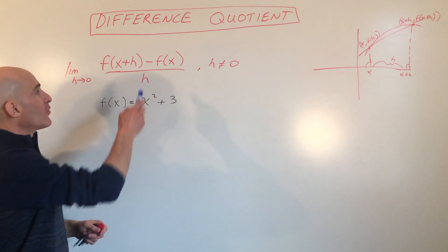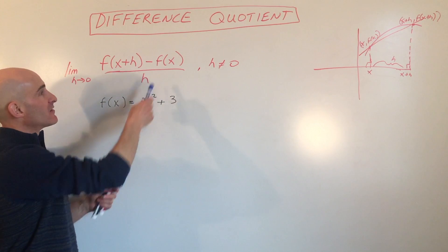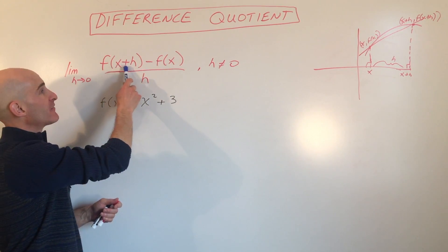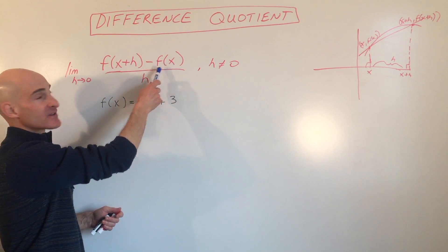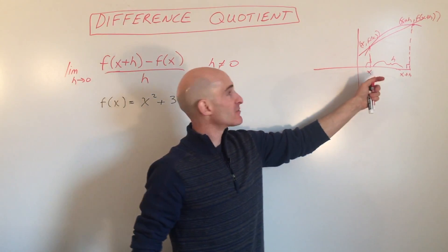What is the difference quotient? Difference means subtracting, quotient means dividing, and this is the formula here: f(x+h) - f(x) all over h. This is starting to get into some calculus.